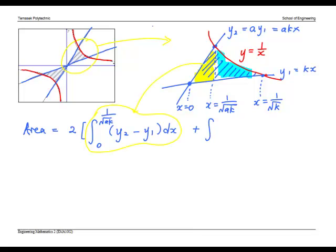To find the area of the blue region, we take the left endpoint, which is 1 over square root AK, to the right endpoint, which is 1 over square root K. The function on top is 1 over X, and the function below is Y1.